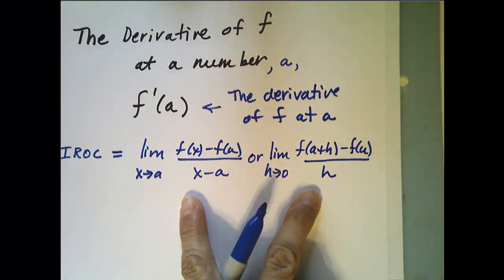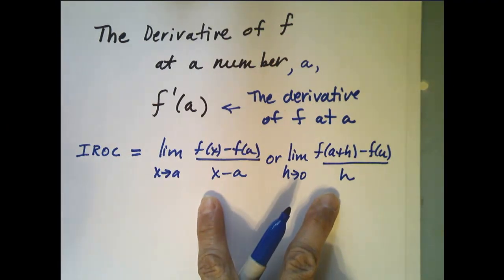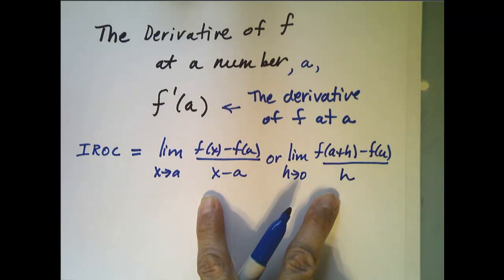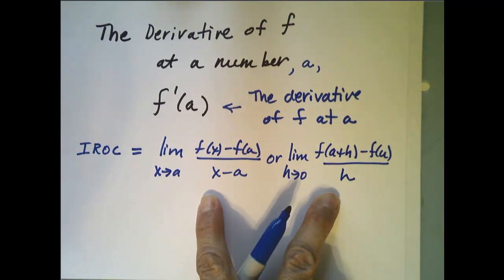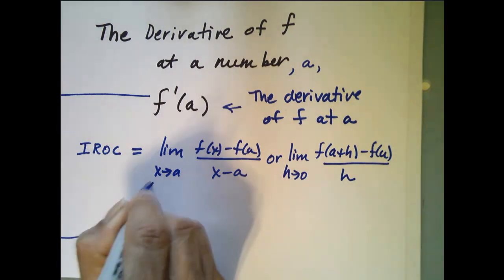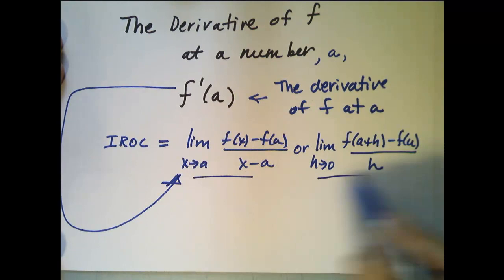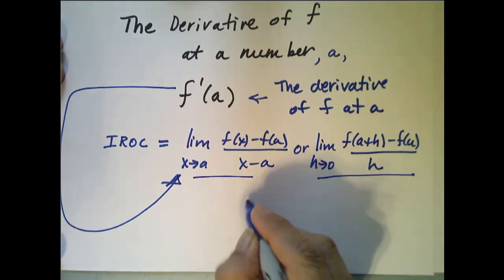Those are both the instantaneous rate of change of my function f at a. And since this is such an important concept, we give this particular limit a name, and that name is the derivative. So this limit, also written as this, is the expression for f prime of a.